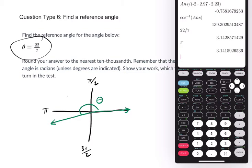The reference angle is an acute angle between the terminal side, that's the end of the angle here, and the x-axis there. That's our reference angle. How can you find that? We would just do 22/7, the angle we have, minus pi. And those are both measurements in radians.